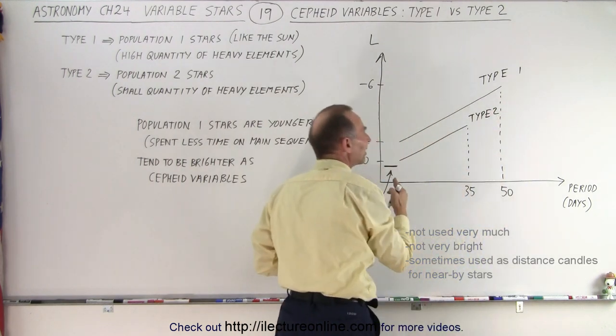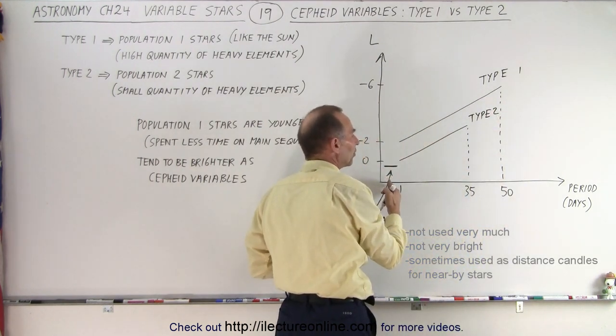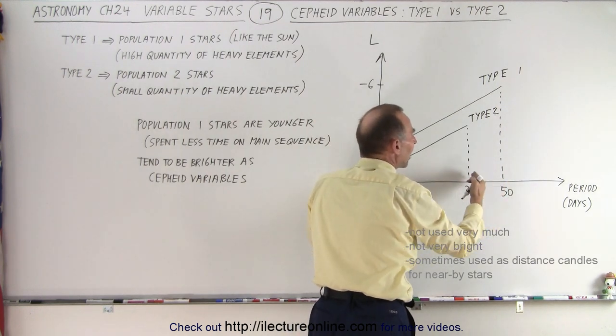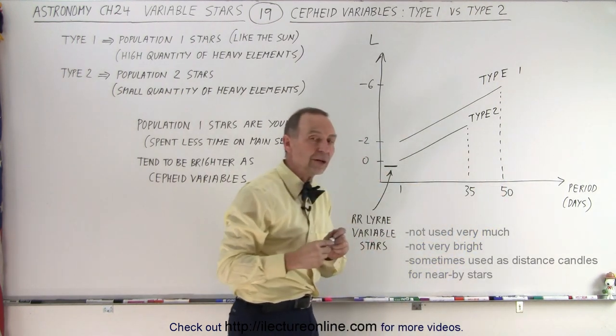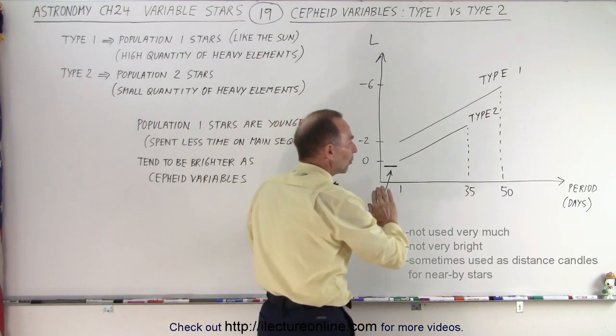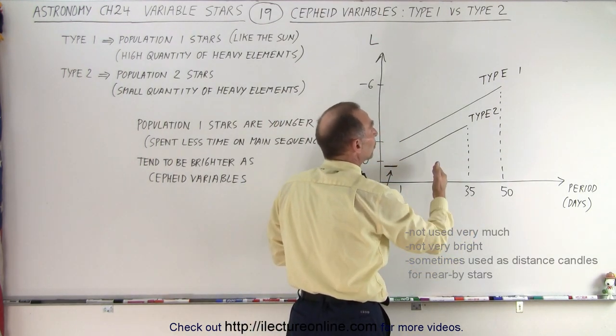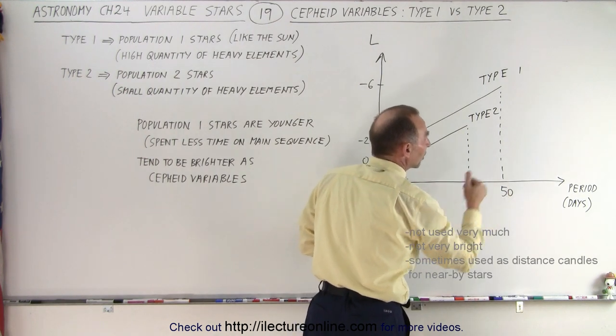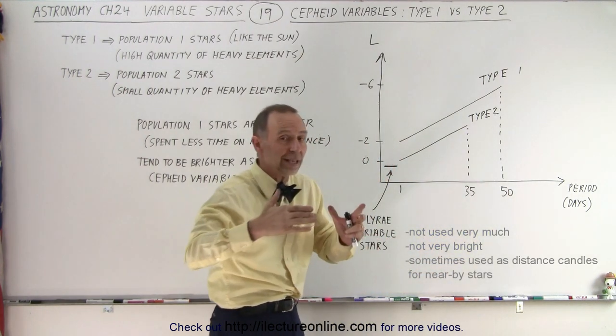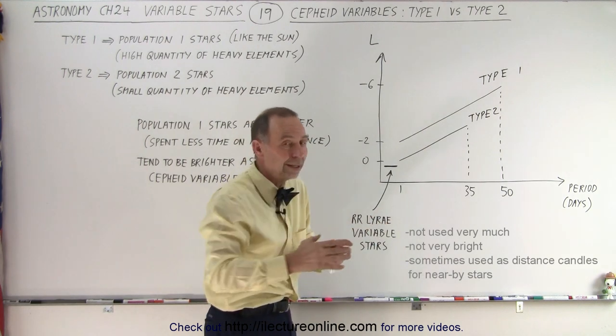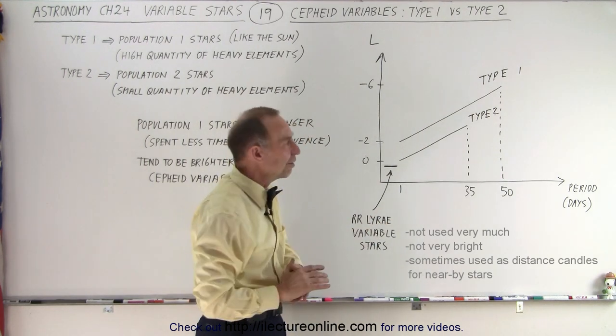Also we find that the Type 1 Cepheid variables have longer periods than the Type 2 Cepheid variables. In other words, Type 2 Cepheid variables we find very few beyond periods of 35 days. With Type 1 we don't find very many beyond the period of 50 days. Although we say that the period of Cepheid variables goes from 1 to 100, there aren't too many that go beyond 50.